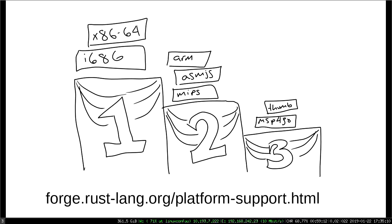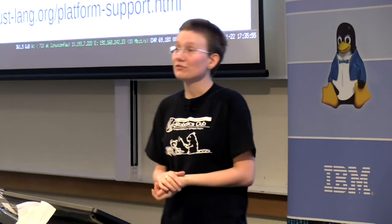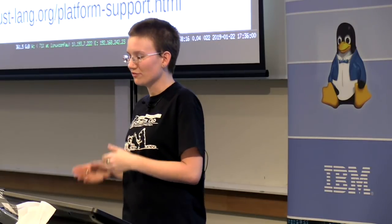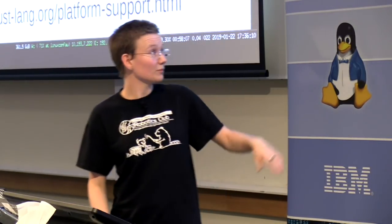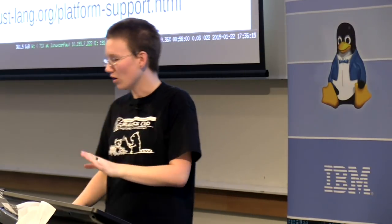Rust categorizes its support for different families of chips in what it calls tiers. Tier one is guaranteed to work — every change to Rust runs tests, builds the code, and tests it on that architecture; if it fails, they fix it before pushing. Tier two is guaranteed to build — they'll build the code for that architecture, but they don't necessarily have the hardware available to test it. Tier three is basically 'this might work, but we don't really make any promises,' because there aren't resources for continuous building and testing. If you want a full list of supported architectures and platforms, check out the Rust Forge, which has a wonderful list with Cargo support and all the details.